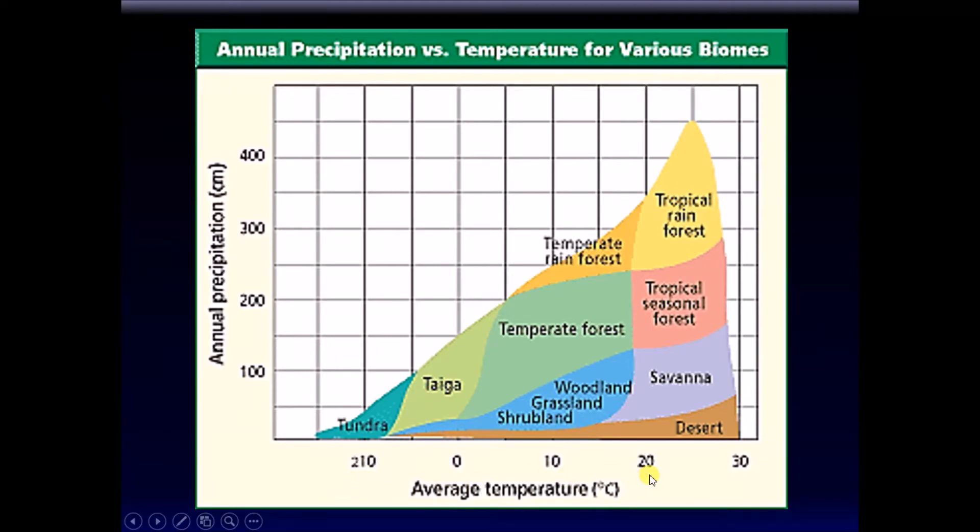One is temperature. The other one is annual precipitation. What does that mean? Rain, basically rain, and different forms of rain. What are other forms of rain on earth?